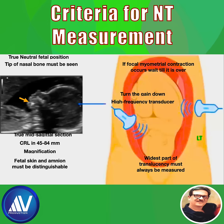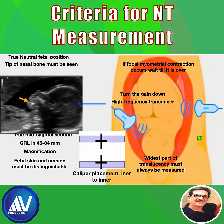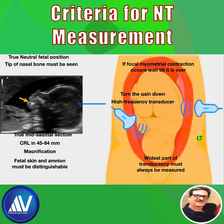The head must be in line with the fetal spine. There should be clear space between the chin and thorax. The tip of the nasal bone must be seen. The rectangular shape of the palate and non-visualization of the zygomatic process are important. The widest part of the translucency must always be measured, with calipers placed perpendicularly on the inner borders of the translucency. The thin nuchal membrane must be seen clearly, and fetal skin and amnion must be distinguishable.